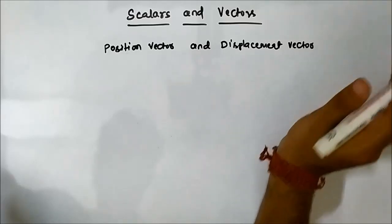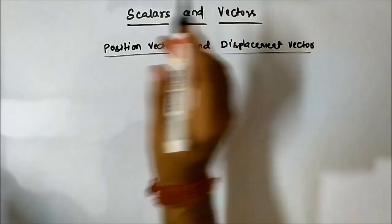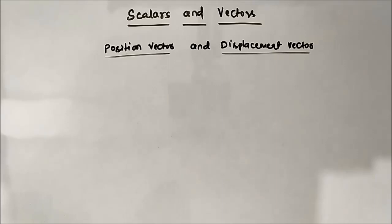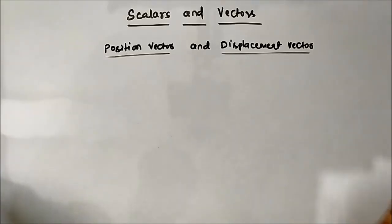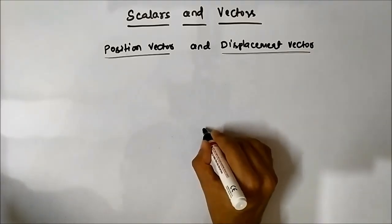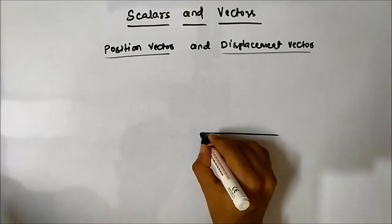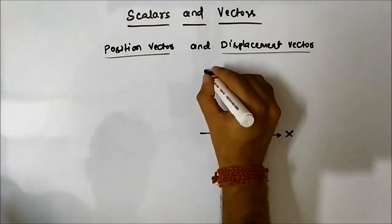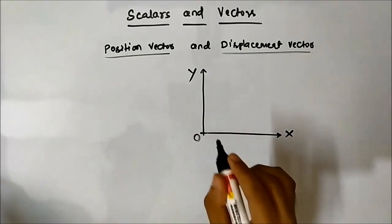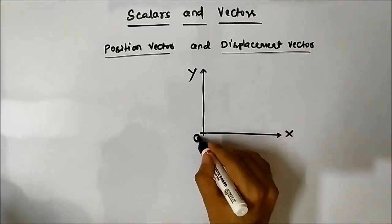We will focus on position vector and displacement vector. Here we will again take the help of a coordinate axis system and we will confine our discussion to the x-y plane, because involving the z plane will create some confusion. Let us draw the coordinate axis — the x-axis and y-axis — and this is the origin, which will be the reference point for us.